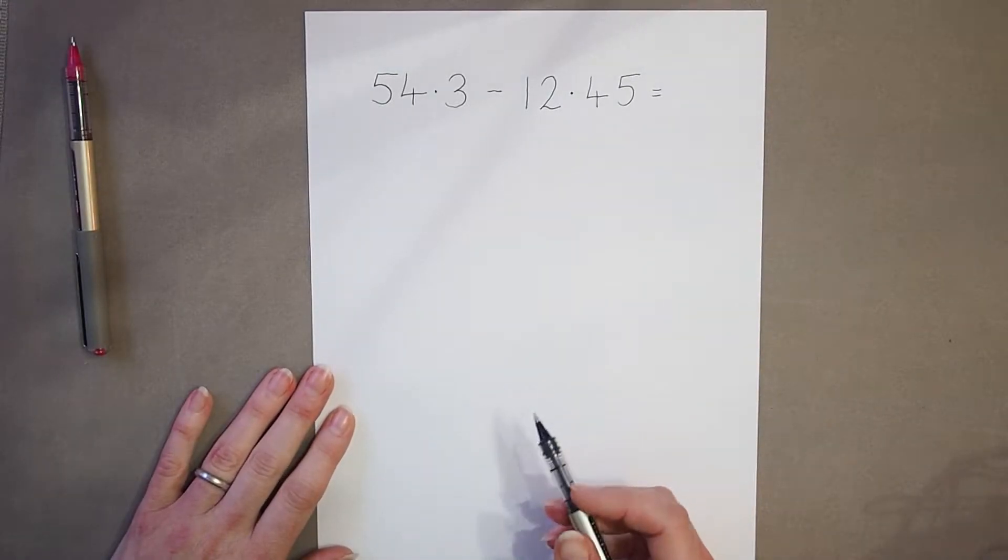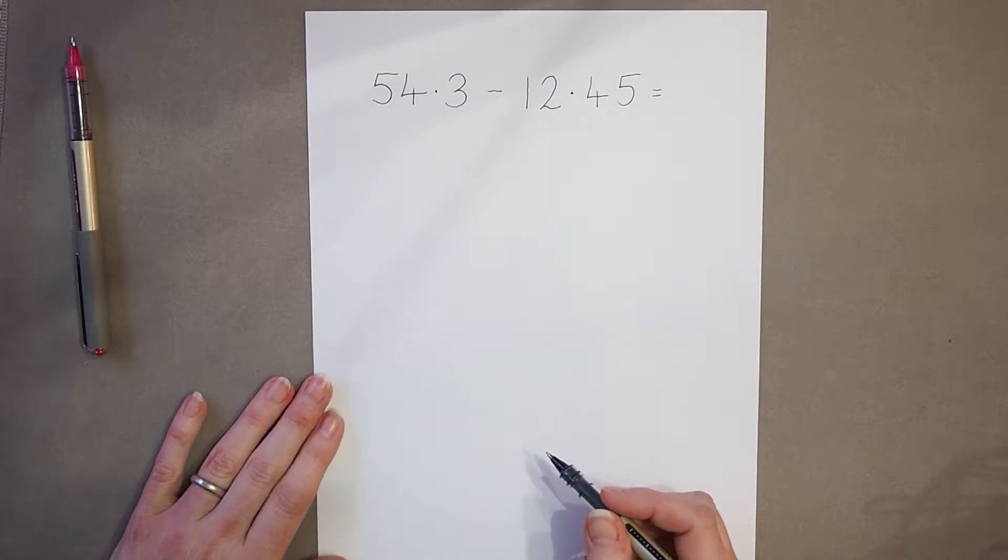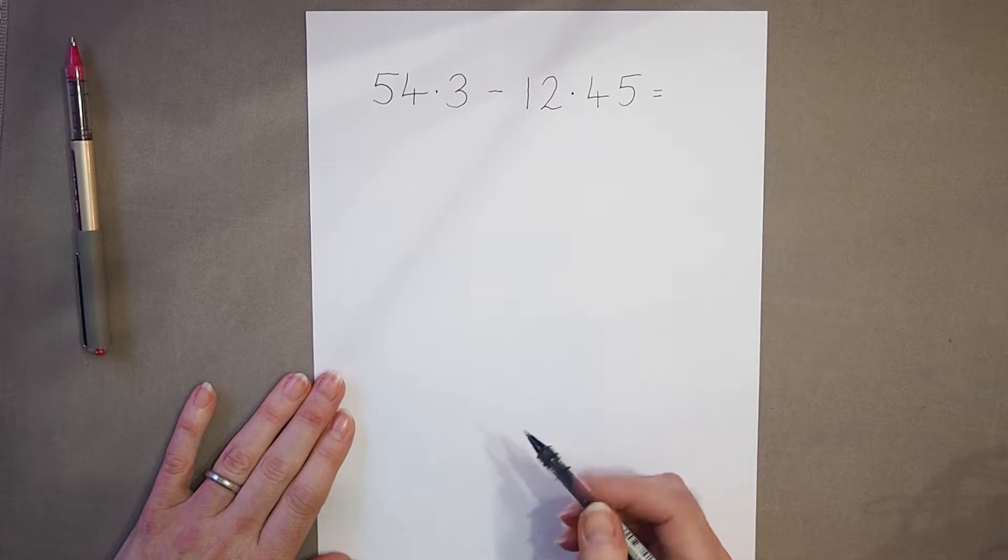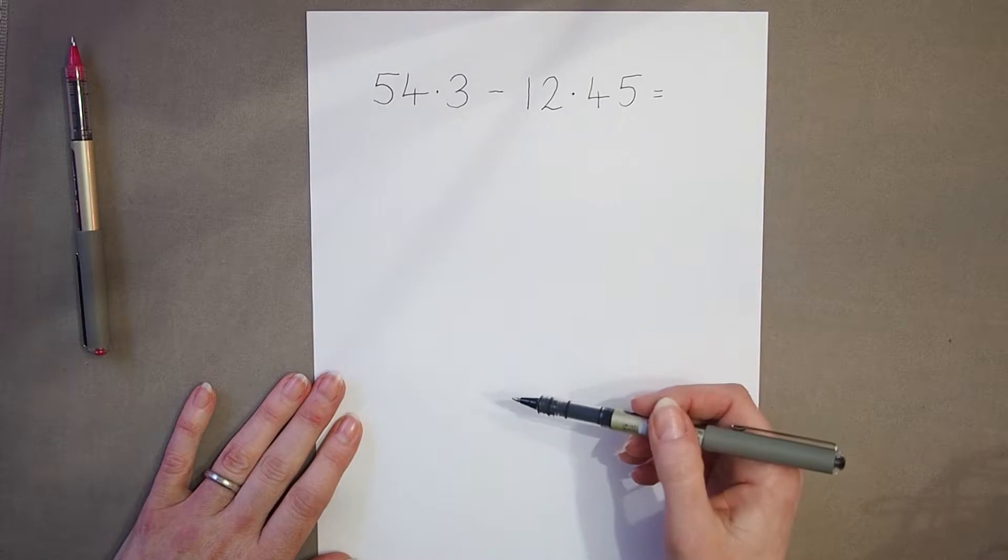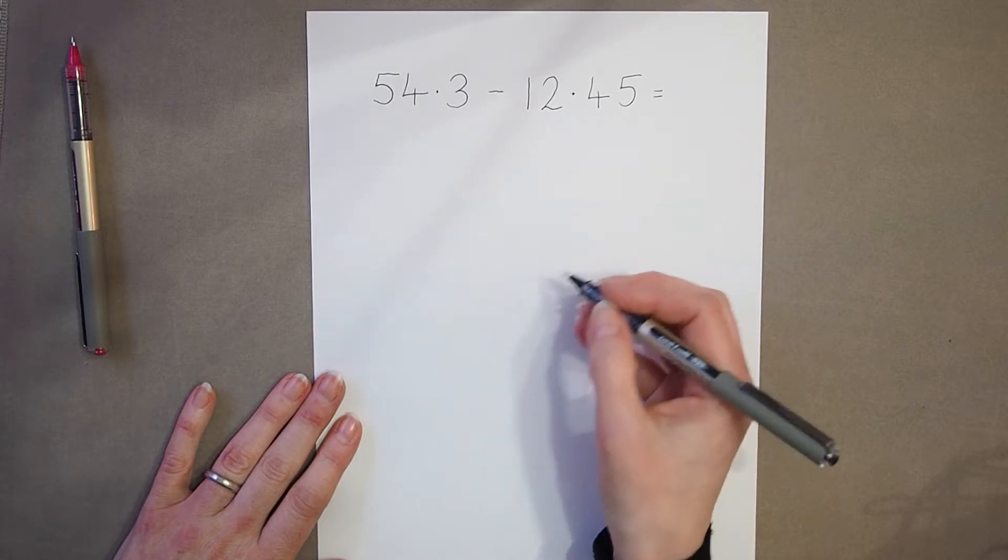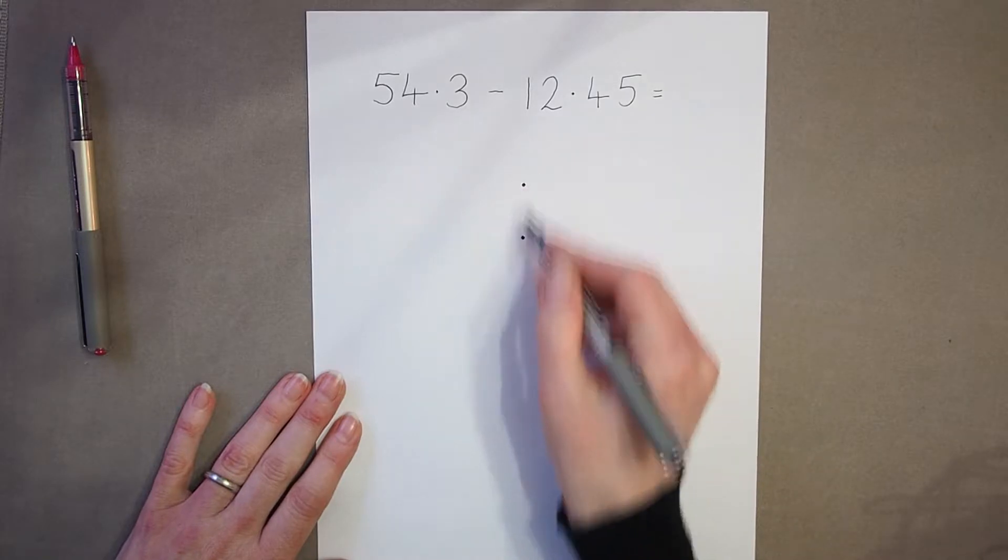We're going to look at how to subtract using our column method when we have decimals. The first thing we've got to do is set out our two numbers correctly, making sure that they're lined up units with units, tens with tens. And the easiest way is to make sure that our decimal points are aligned.